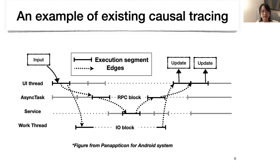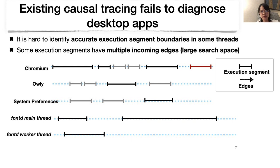When we apply causal tracing to desktop apps, we find it's often difficult to identify the accurate boundaries of execution segments. In other words, it's hard to tell when the thread begins processing a request. This introduces inaccuracies in the trace graph. Moreover, some execution segments have multiple incoming edges, which mislead the diagnosis.